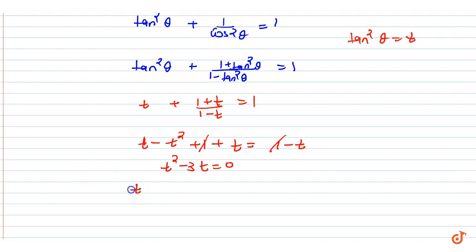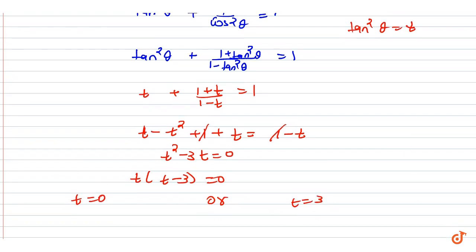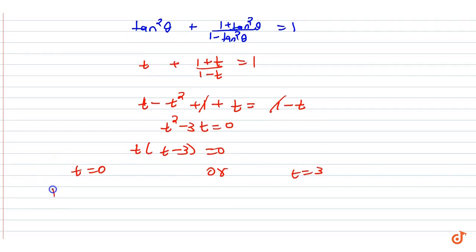Minus 3t is equal to 0. So common is t, t minus 3 equal to 0. So here t equal to 0 and t equal to 3. Basically t was tan squared theta. So tan squared theta equal to 0 and then tan squared theta equal to 3.